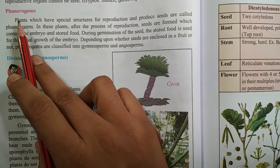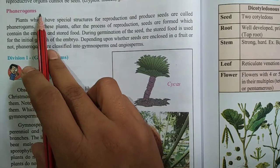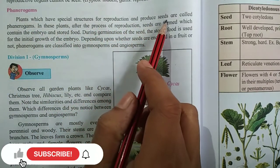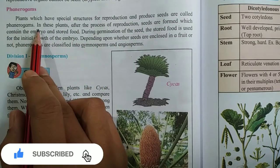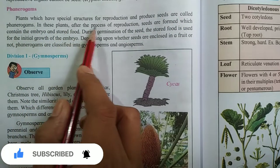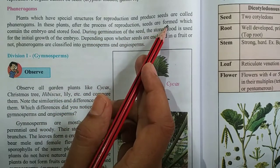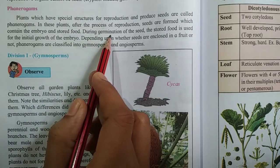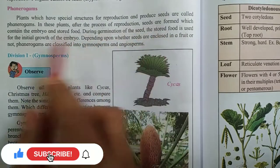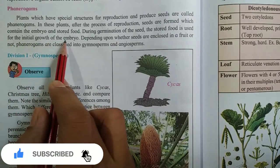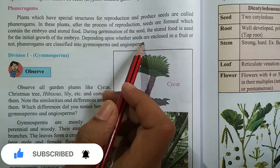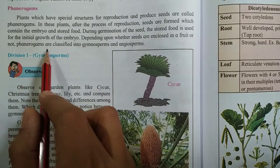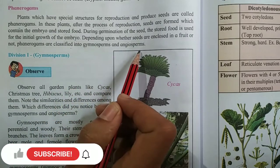See here, next part is Phanerogams. Plants which have special structure for reproduction and produce seeds are called Phanerogams. In these plants, after the process of reproduction, seeds are formed which contain the embryo and stored food. During the germination of the seed, the stored food is used for initial growth of the embryo. Depending upon whether the seeds are enclosed in a fruit or not, Phanerogams are classified into Gymnosperms and Angiosperms.